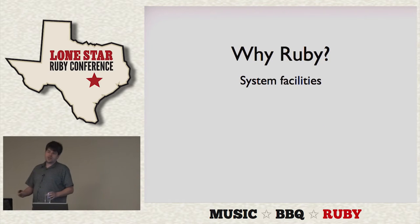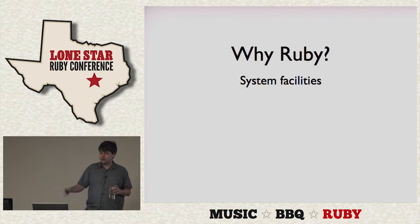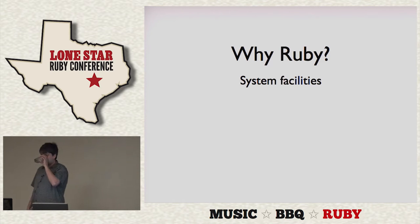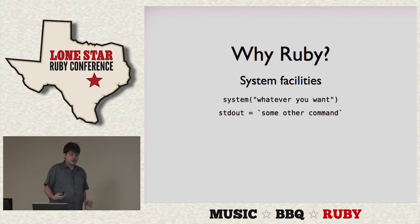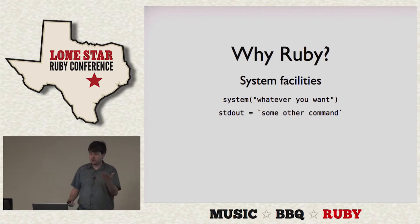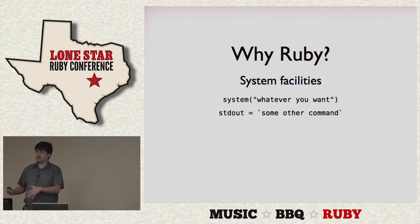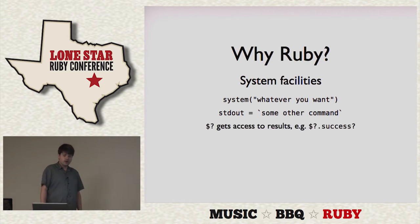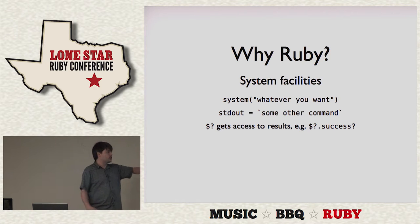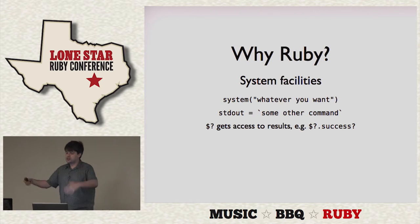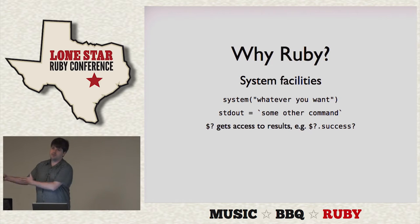Everything I've said so far, you could probably make some great command line applications in Perl or Python or whatever. So why do we care about Ruby? Well, there are really easy ways to interact with the system as we've seen already. System just executes whatever. Backtick executes whatever and gives you the output as a string. And `$?` gives you access to the results, so you can say if `$?` got success, then everything's cool.